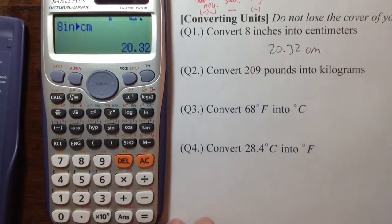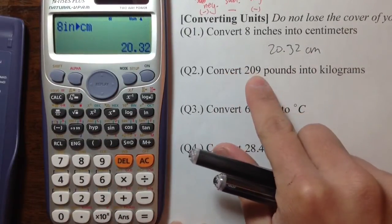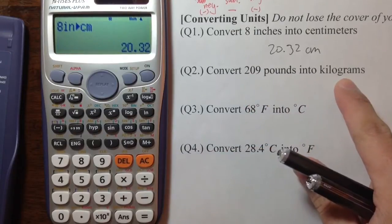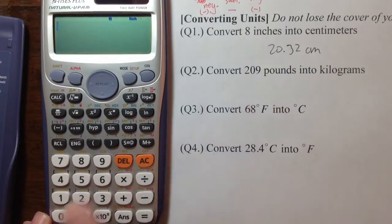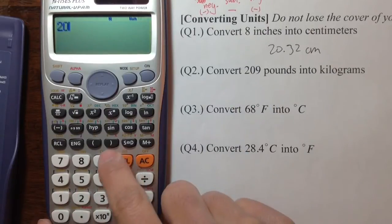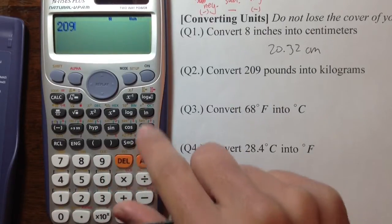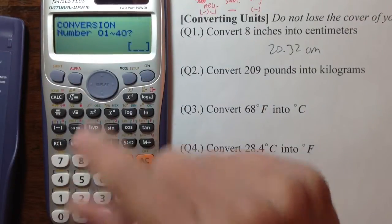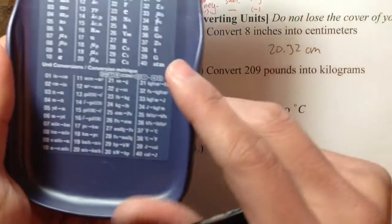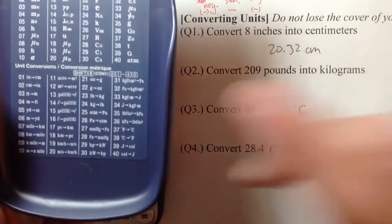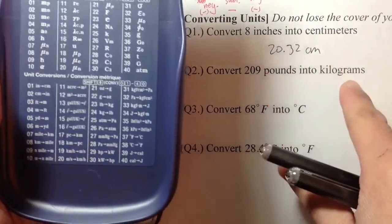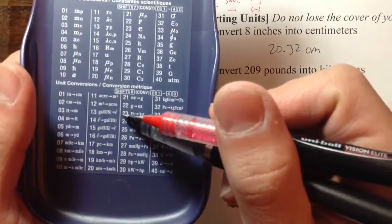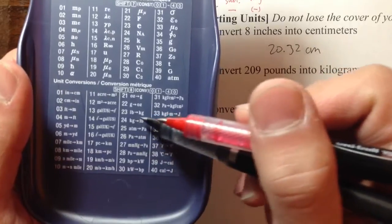And let's do the next one. I need to convert 209 pounds into kilograms. So first press 209, and then go to shift and convert. And we are looking for the conversion number, and we are going to use our cover. Pounds to kilograms, so that's LB to kg, which is the number 23.